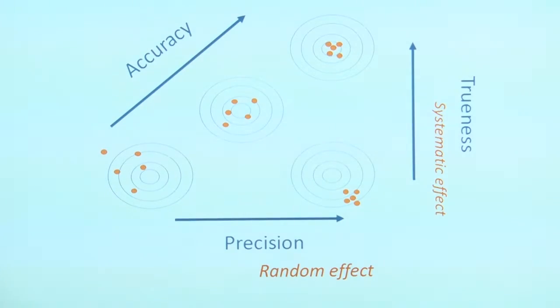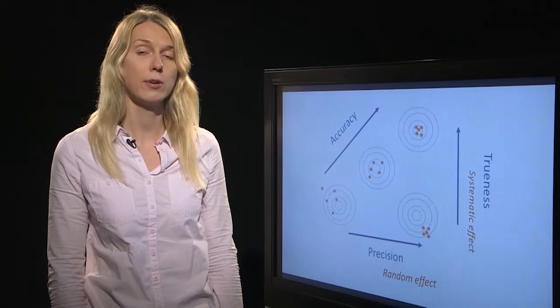According to the definition of International Vocabulary of Metrology, accuracy is defined as the closeness of the measurement results and the true value.